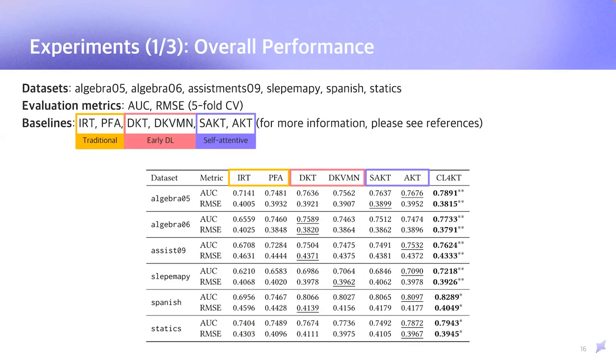To validate our model, we used six benchmark datasets and we used the evaluation metrics. We used AUC and RMSE as our evaluation metrics, which are widely used in this field. In terms of overall performance, we compared our model to several baselines, including traditional models, IRT, PFA, and the early deep learning model, deep knowledge tracing, and DKVMN, and recently published self-attentive models, such as SAKT and AKT. The results show that our model consistently outperforms other baselines.